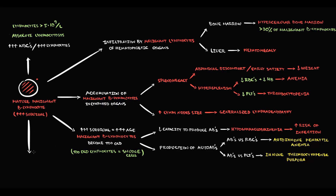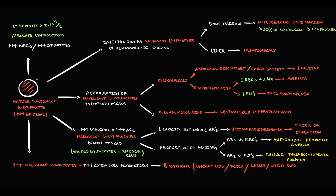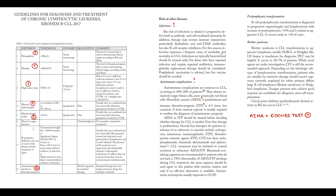Malignant B-lymphocytes produce cytokines. With such a huge amount of malignant B-lymphocytes in the blood, cytokine production becomes massive, causing so-called B symptoms: weight loss, fever, chills, and night sweats. B symptoms are the last criterion for disease progression. Why do we need disease progression criteria? Because unless the criteria are present, we do not treat patients with CLL — we just observe. Only when the disease progresses into the active phase do we begin to treat.